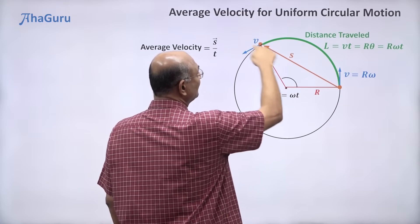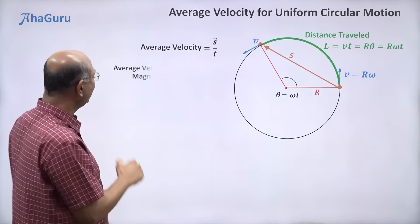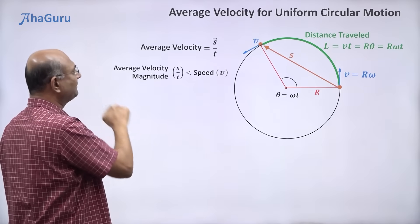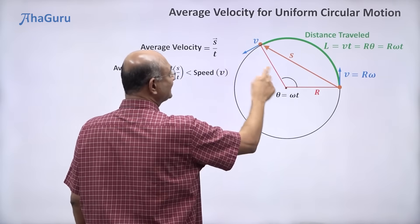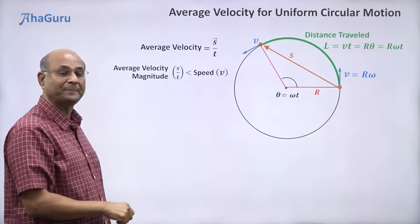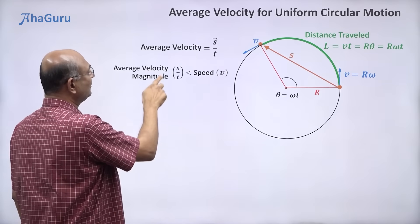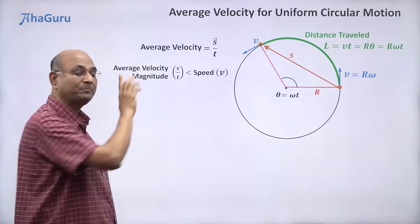So if I am looking at the magnitude of the average velocity, then I am looking at the length of this chord. We already know that the average velocity magnitude, which is the chord length by time, is less than the arc length by time, which is the speed. So average velocity magnitude s by t is less than the speed v.